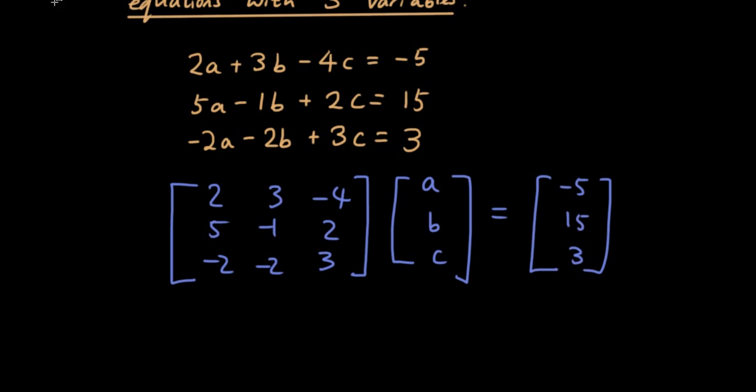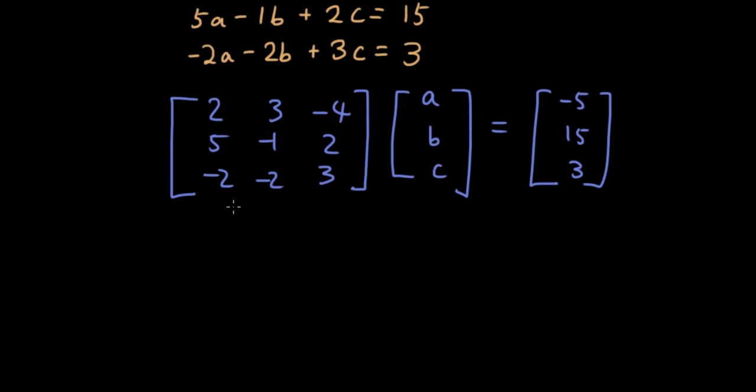Once you have done that, then the next step is to write an augmented matrix, which means a matrix without the variable matrix. So let's write 2, 3, negative 4, 5, negative 1, 2, negative 2, negative 2, 3, a straight vertical line down the middle, and then negative 5, 15, 3.